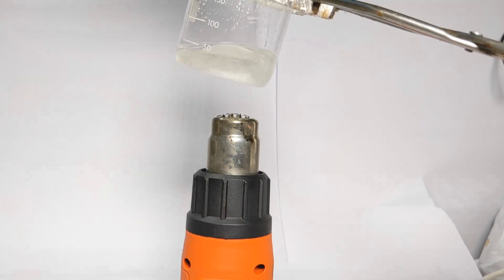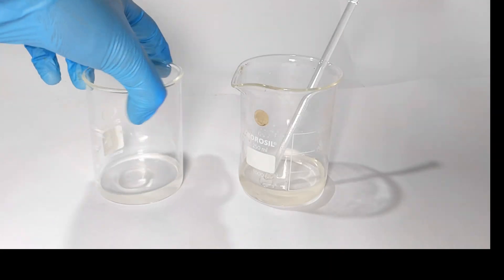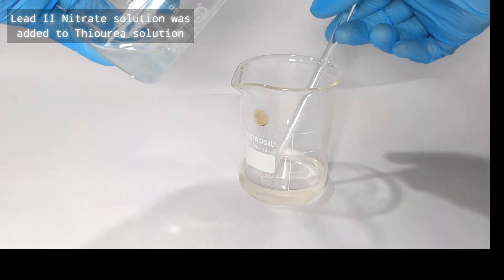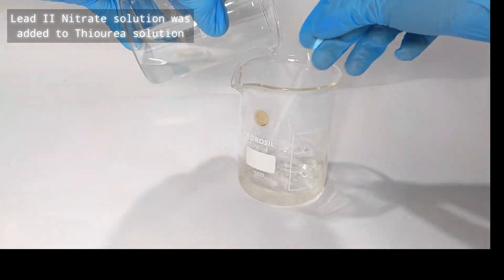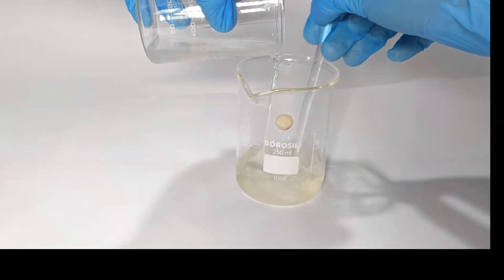Once both the solutions are clear, allow them to slowly cool down to room temperature and then add the lead(II) nitrate solution to the thiourea solution. The mixture should be thoroughly stirred while adding the lead(II) nitrate.